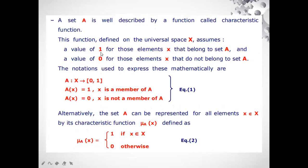This characteristic function can be defined as a function in which a value of one for those elements where X belongs to set A, then we are getting the value one. And if X does not belong to set A, then we are getting the value as zero. So the notation which will be expressed in mathematical form will be A colon X belongs to zero or one. So we have only two values in crisp set, zero and one.